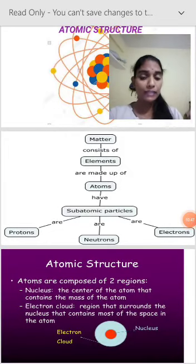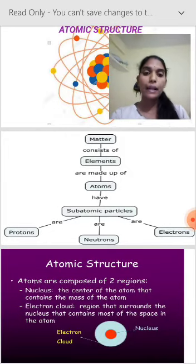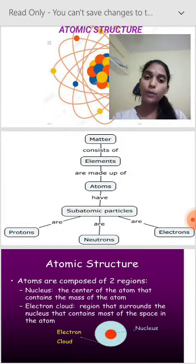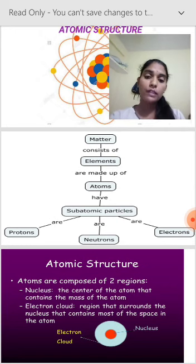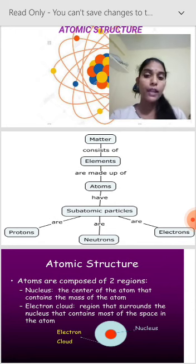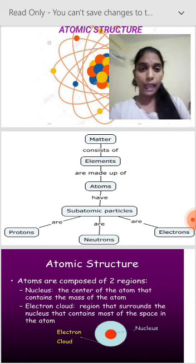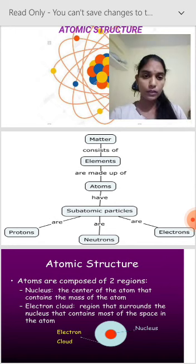Matter consists of elements. Elements are made up of atoms. Atoms have subatomic particles. In subatomic particles there are three types — they are protons, neutrons, and electrons.